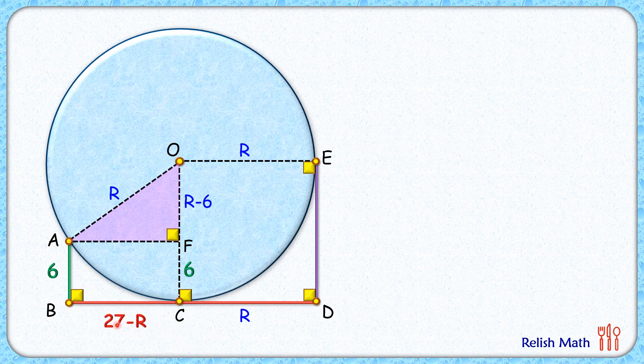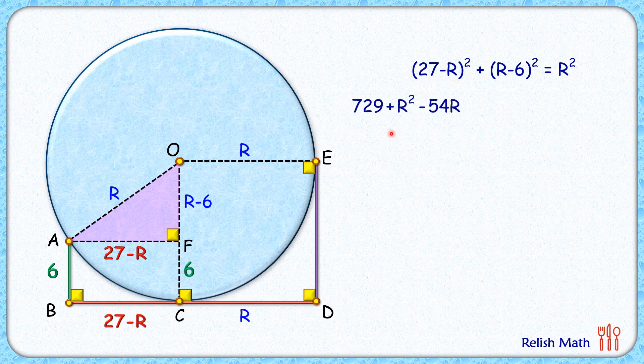Applying (A minus B) whole square, we get this expanded form. For (R minus 6) whole square, this will be the expanded form. This equals R squared.